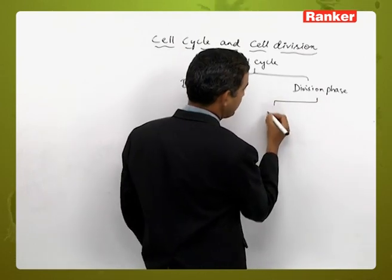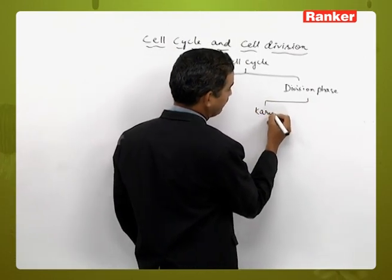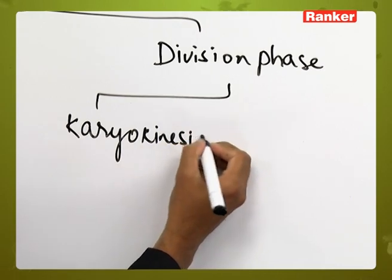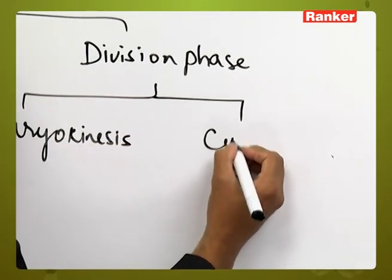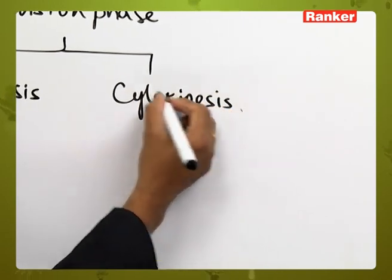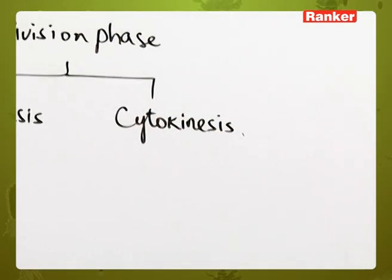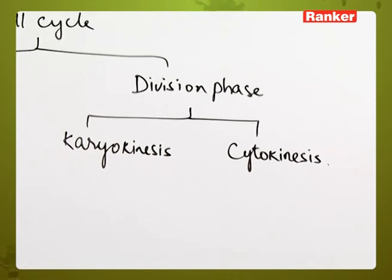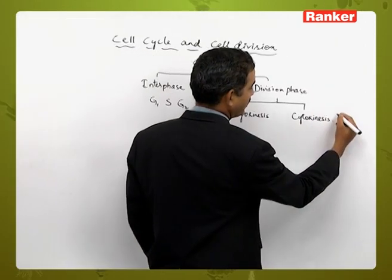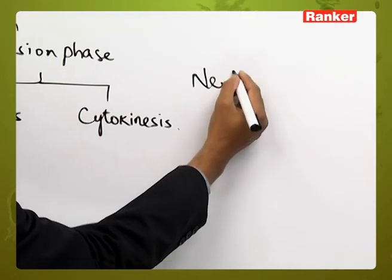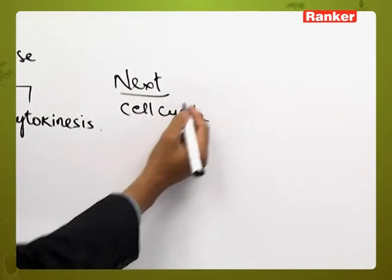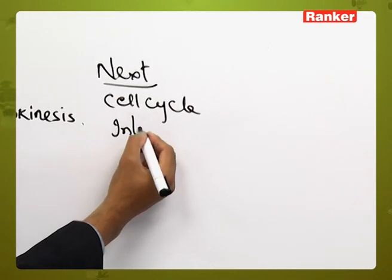The division phase is further divided into karyokinesis and cytokinesis. The cell cycle can be divided into these four stages. After cytokinesis, the cell will enter the next cell cycle, which once again will start with interphase.